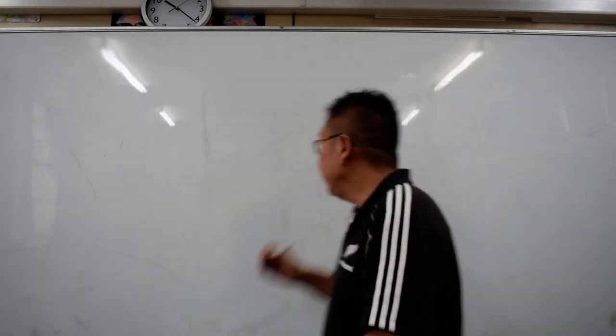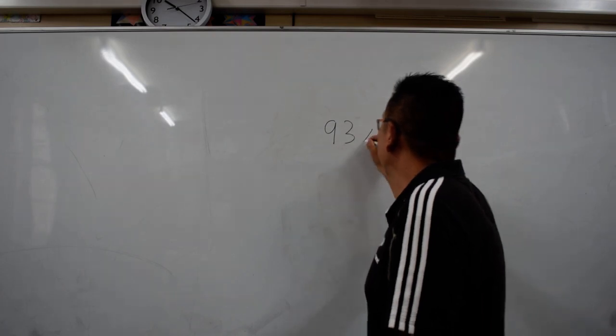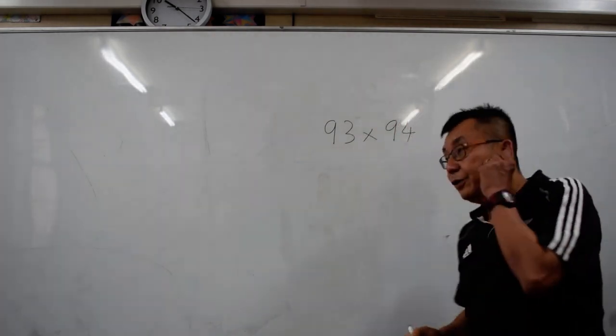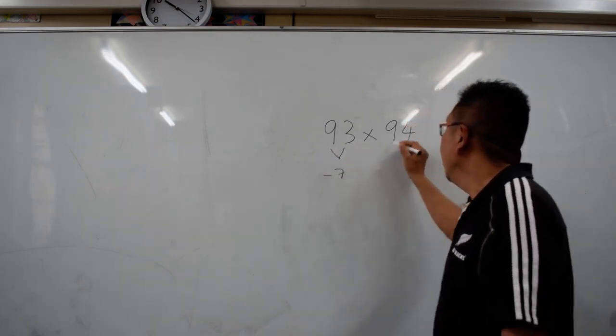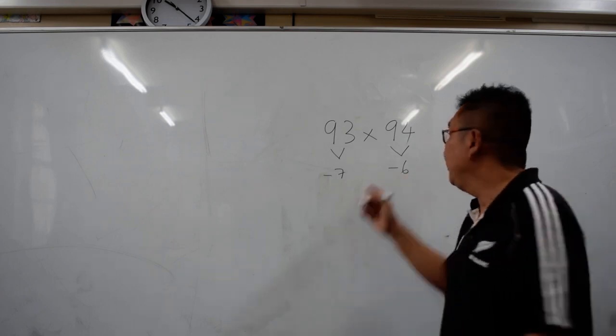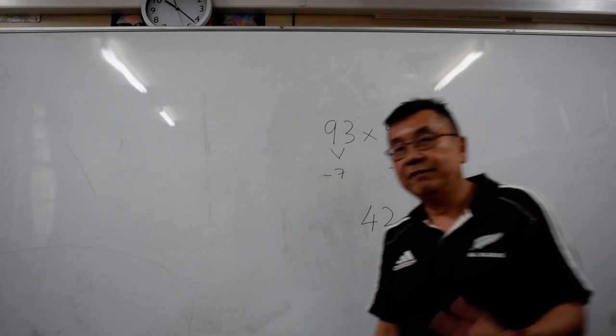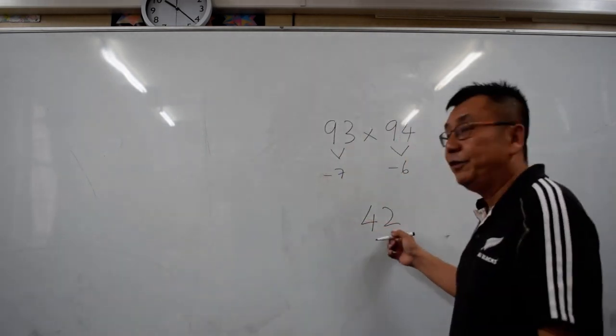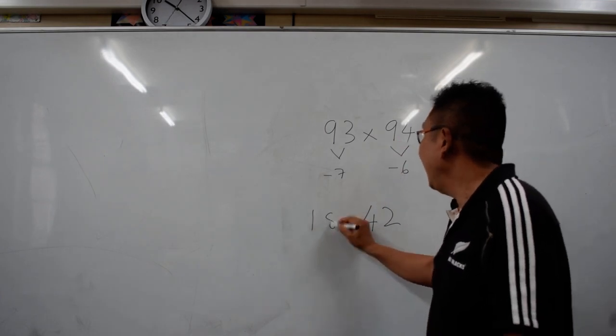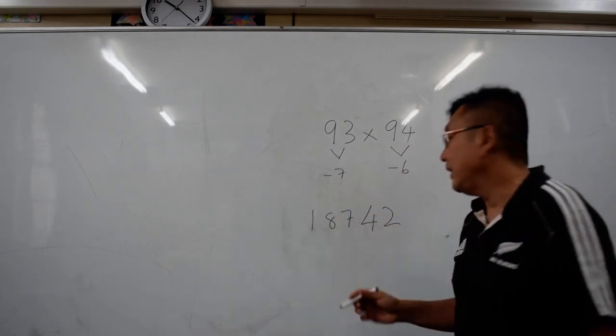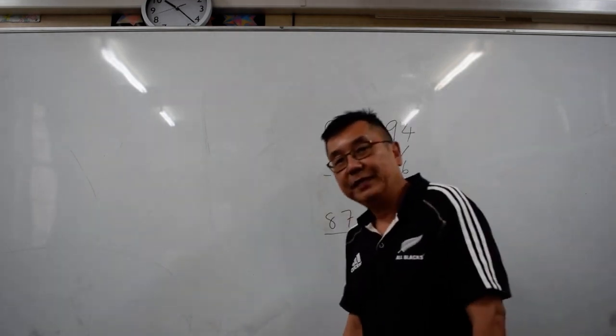The next trick we are going to do is multiplication of 93 times 94. So what you do, you just make the difference. To get 100 is minus 7. And to get 100, you minus 6. So the digit is going to be 7 times 6. That will be your last 2 digits, 42. And then you just add 93 and 94 is going to be 187. The trick is that, just delete the 1 and the answer is 8742.